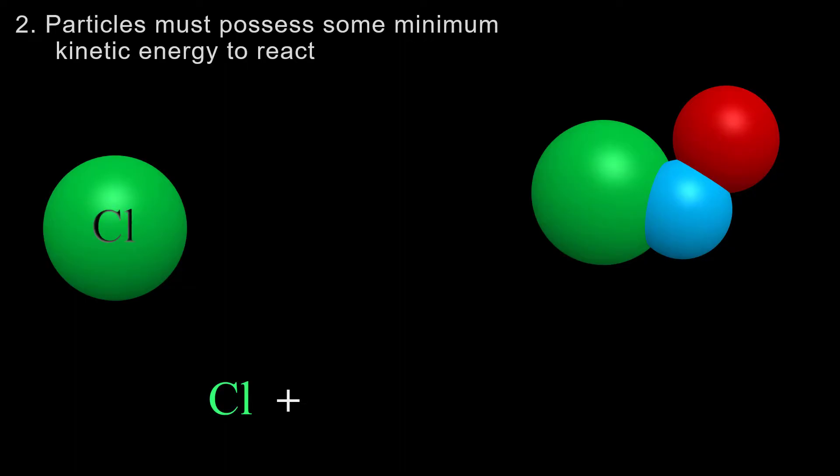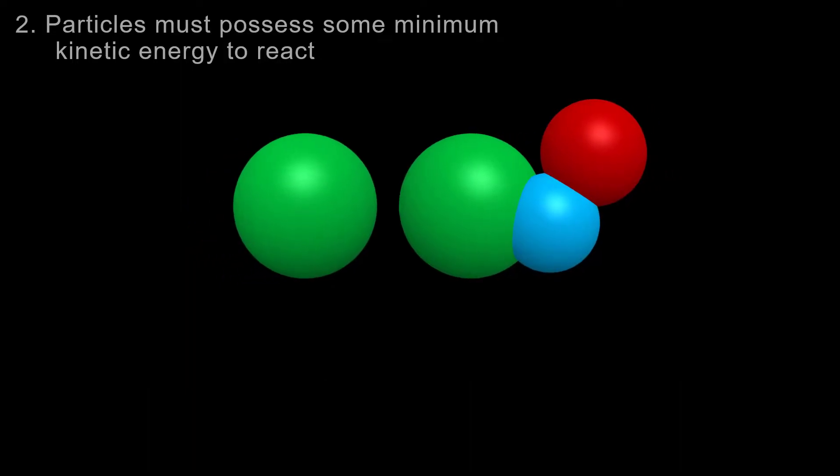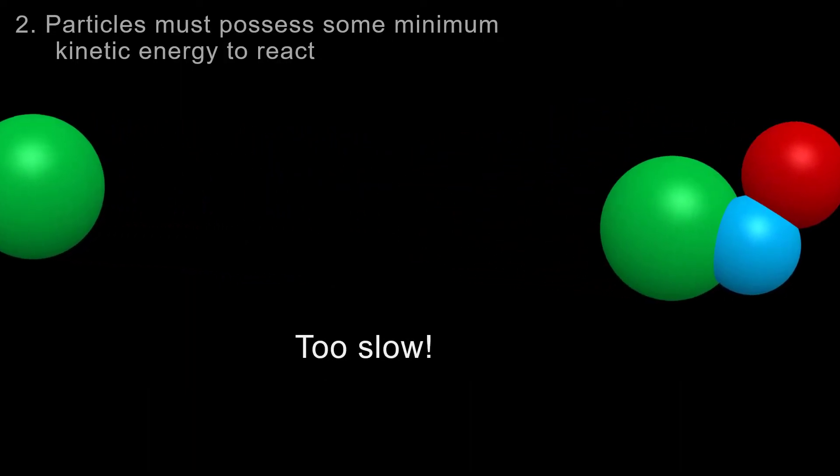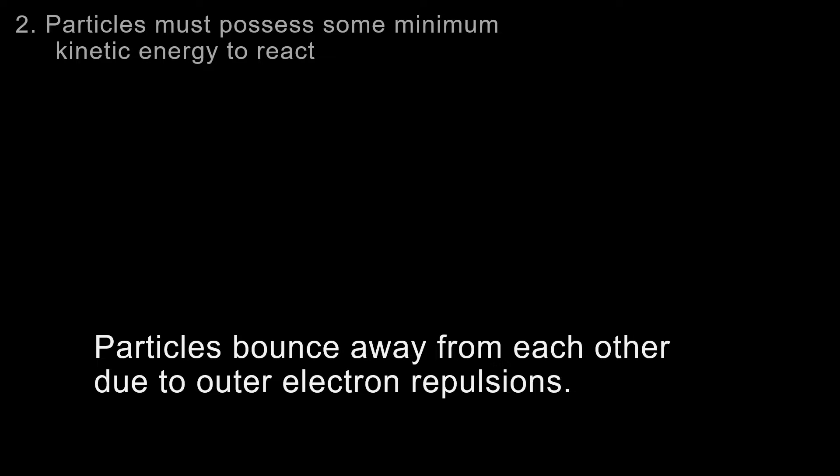In the reaction of a chlorine atom with NOCl, if the colliding particles are too slow, in other words not enough kinetic energy, particles will bounce away from each other due to outer electron repulsions and no product forms.